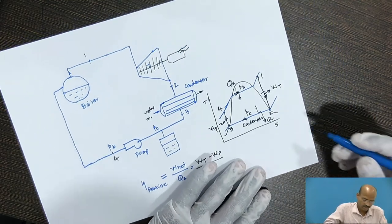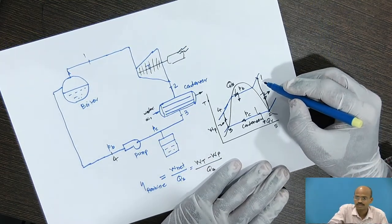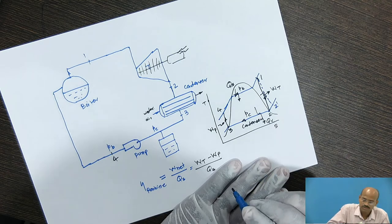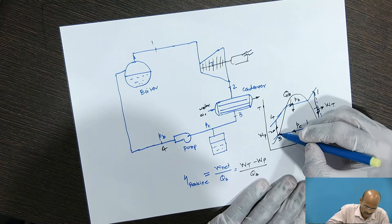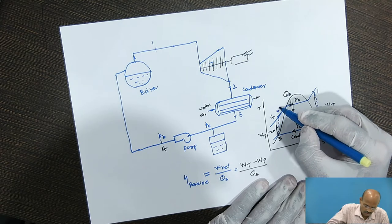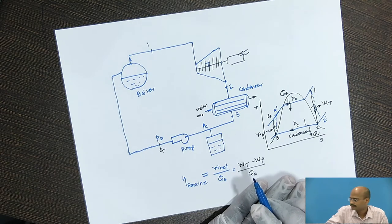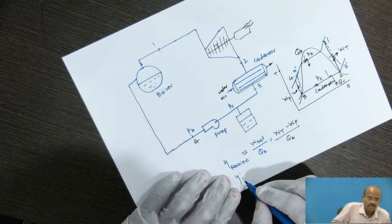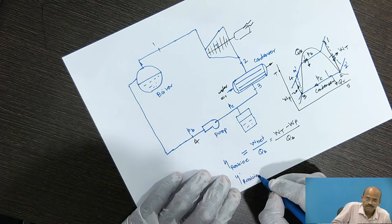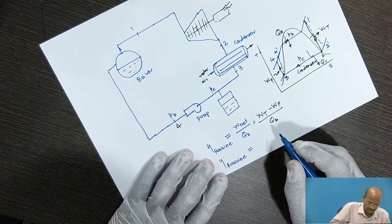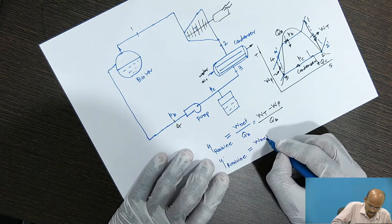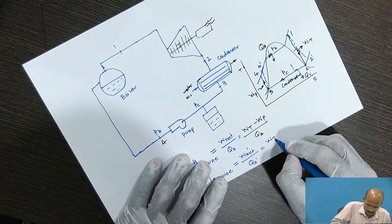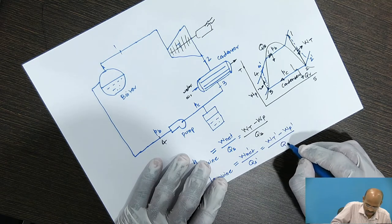Now, for the actual Rankine cycle, if we consider the irreversibility, then this will be polytropical expansion process from 1 to 2 dash and actual pressurization 3 to 4 dash, it becomes actual Rankine cycle. In that case, actual Rankine efficiency can be written as actual network done divided by actual heat supplied. So, this becomes equal to Wt dash minus Wp dash divided by Qs dash.